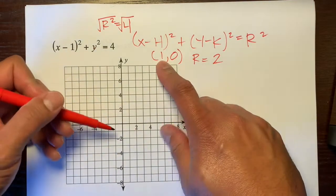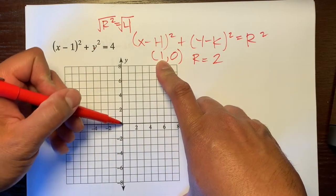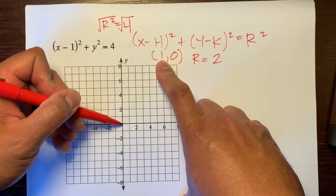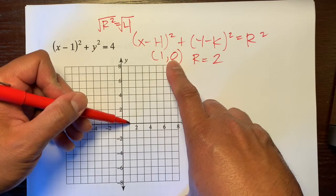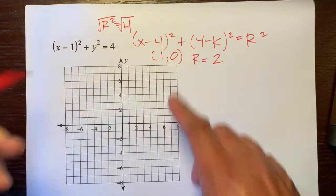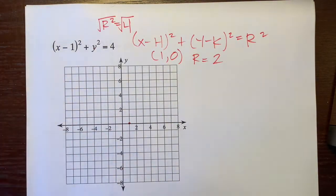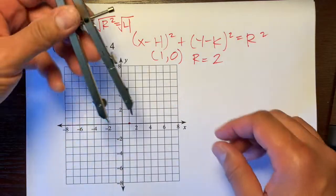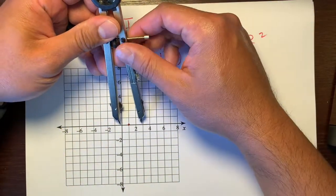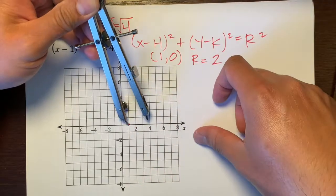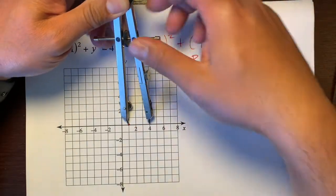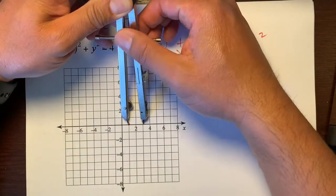1, 0. This 1 is our horizontal shift from the origin. So we're going to go right 1. And this says, don't shift at all. So this is our center right here. And then, we'll take our compass and open the radius. So we're going to put this metal part right here, which is the center, on our center.